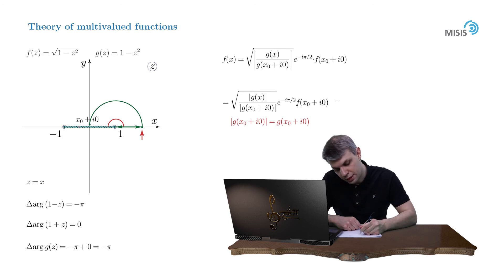And for our square root, we'll now have the square root of modulus of g of x divided by the square root of g of x0 plus i0 multiplied by f of x0 plus i0 times negative i.